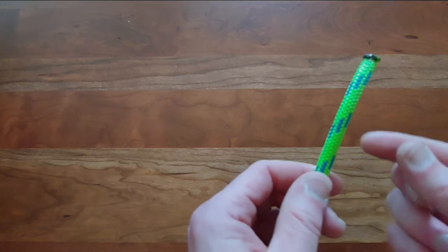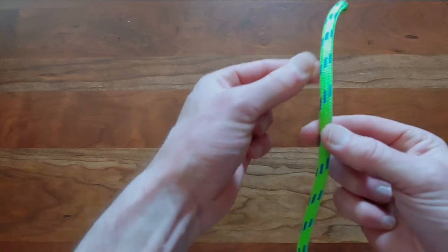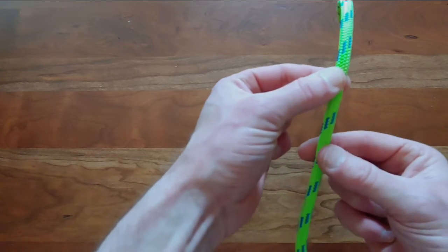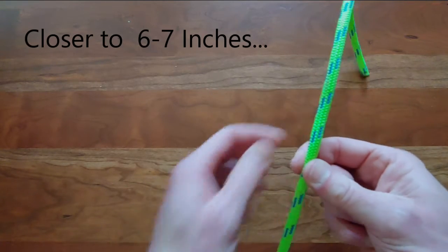Now for most of these knots, you're going to want to make things symmetrical. So what I'm here doing is measuring off about eight or nine sections of rope.